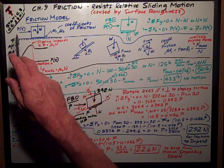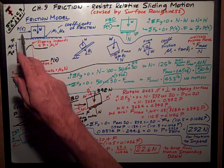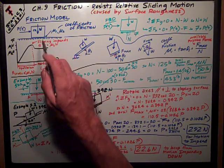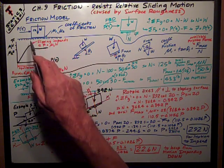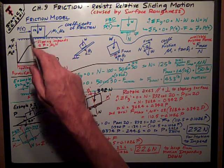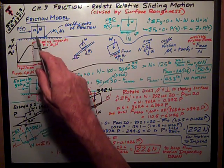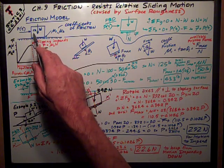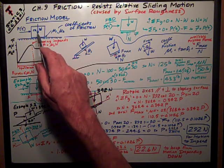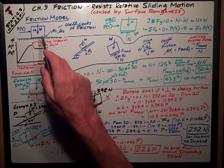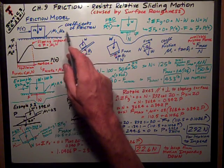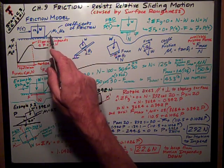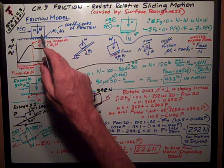We have a force that increases with time, P(t). We have the weight of a block — it's how it's represented a lot of times — acting through the center of gravity of the block. And then we have two coefficients of friction between the block, whatever it's made out of, and the surface that the force is trying to slide it on.